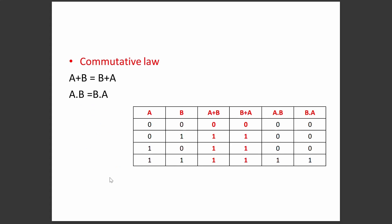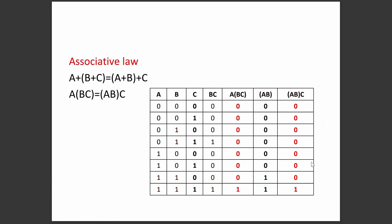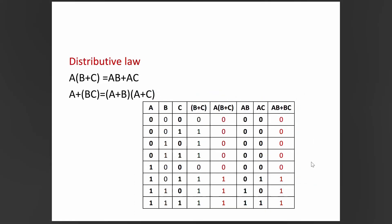The commutative law states A+B = B+A and A·B = B·A, which can be proved using a truth table by writing the left-side and right-side equations and showing the answers are the same. The associative law states A+(B+C) = (A+B)+C and A·(B·C) = (A·B)·C.